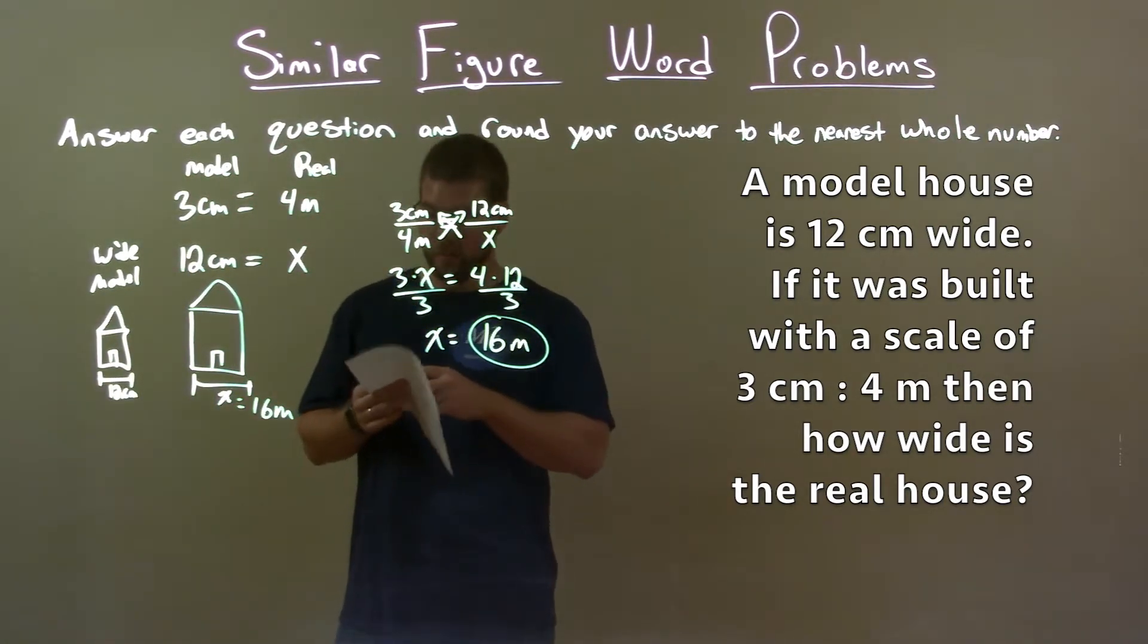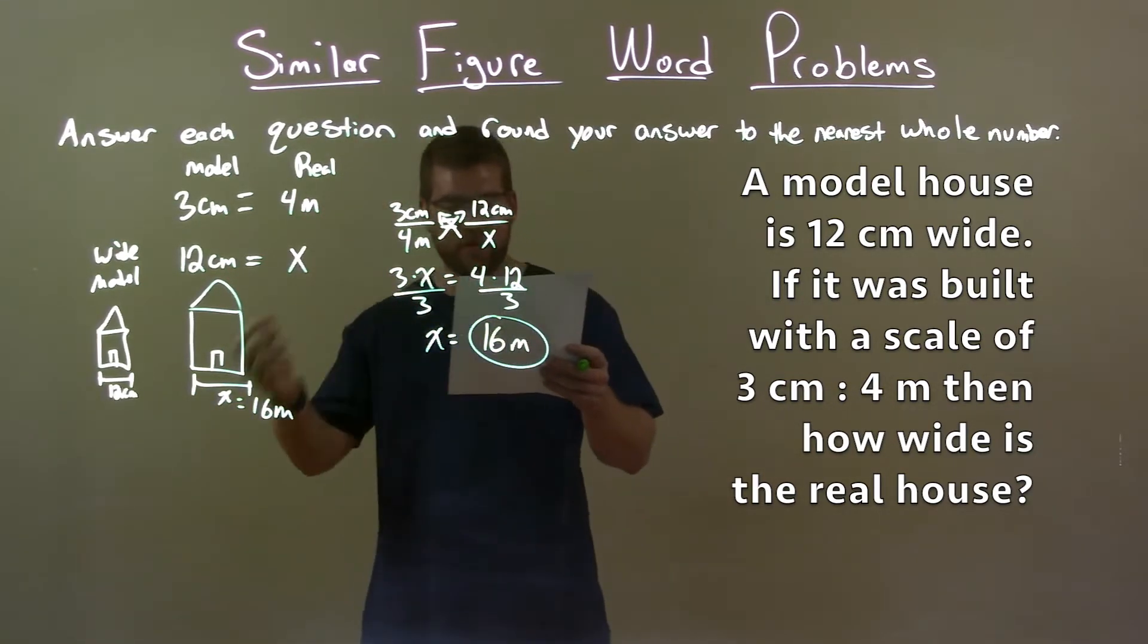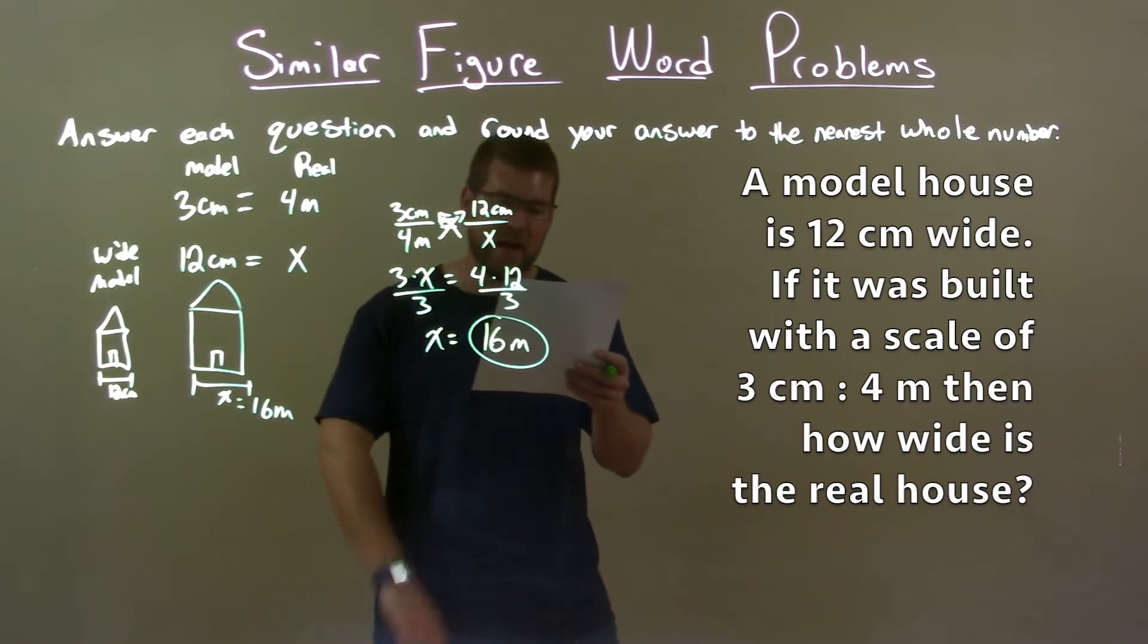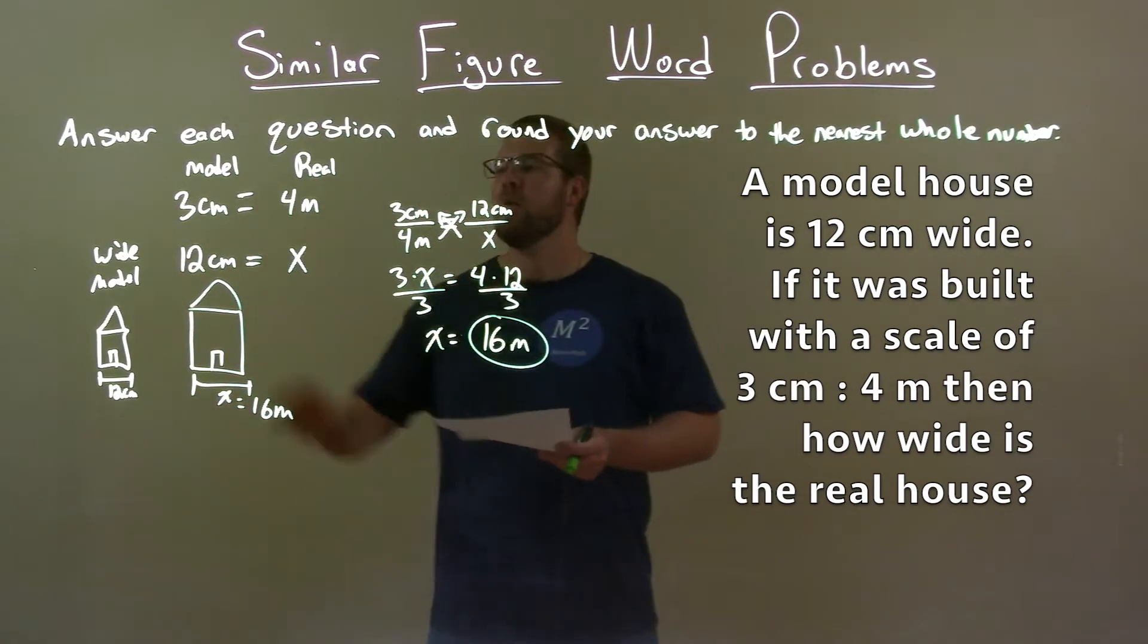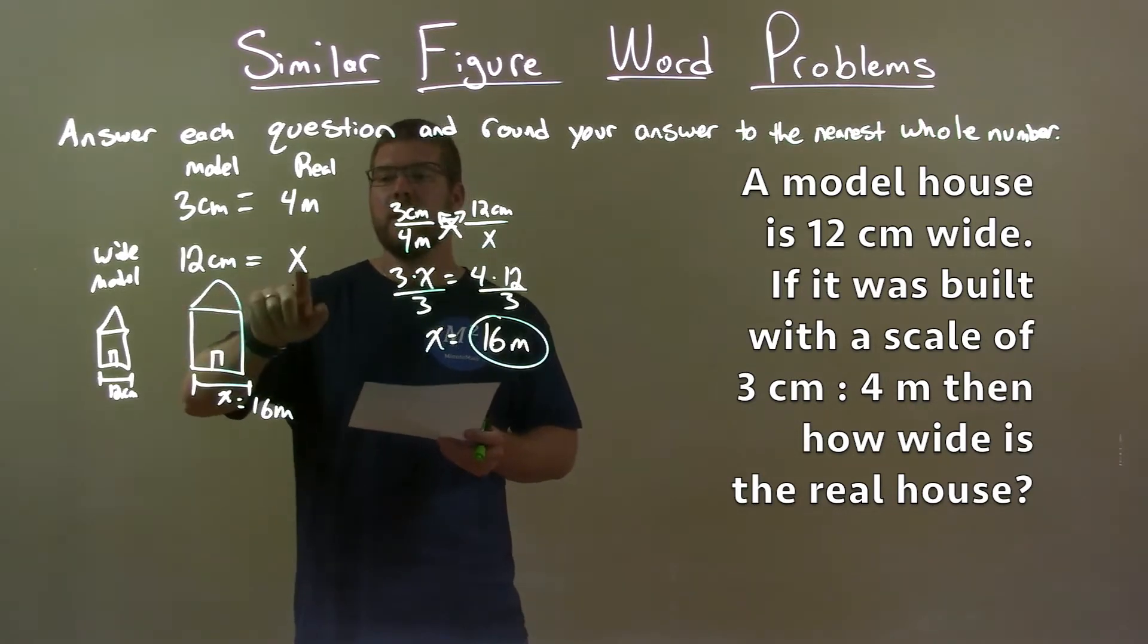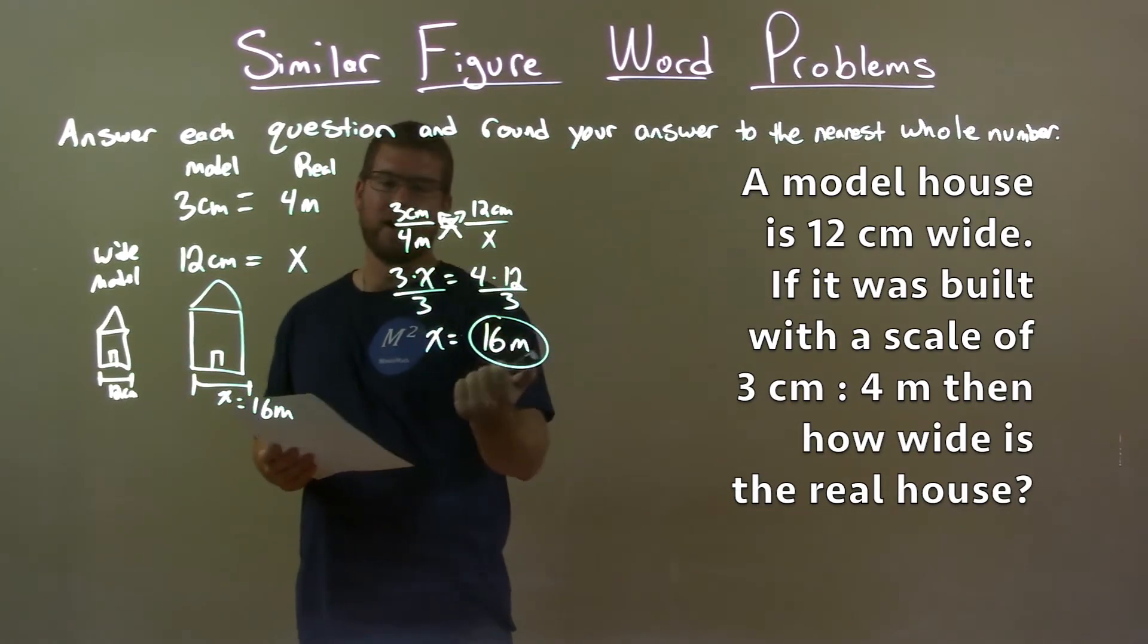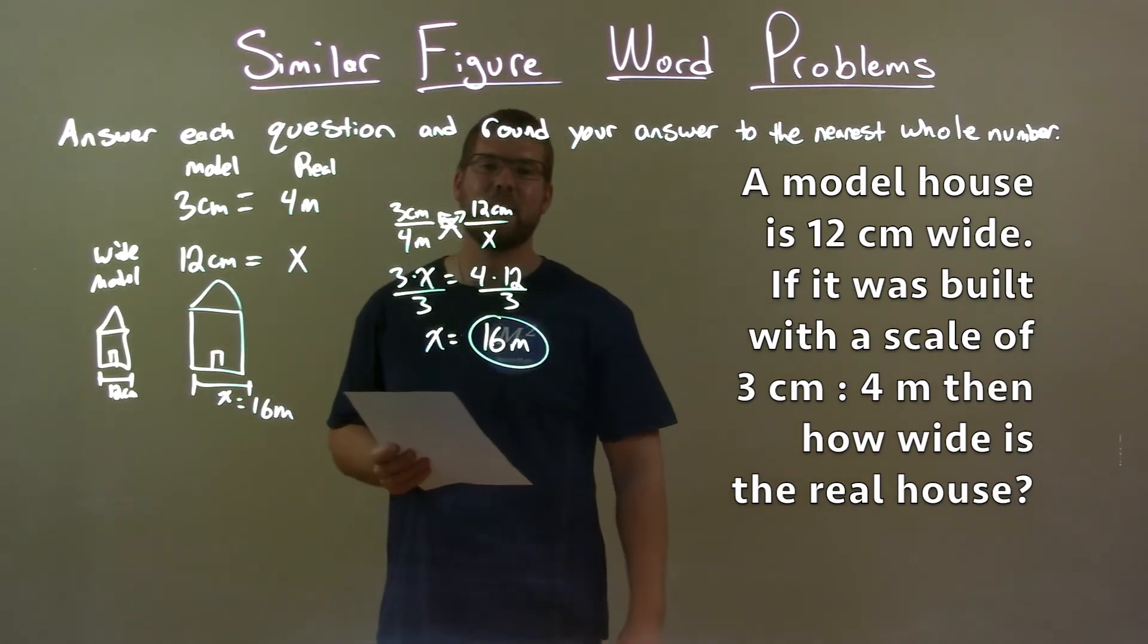Quick recap. We're given the problem: A model house is 12 centimeters wide. If it was built with a scale of 3 centimeters to 4 meters, then how wide is the real house? Well, we'll use that scale plus the value we're given for the width of the model and set it equal to that variable X, the width of the real house. We use that to make a proportion, solve for variable X, and got a final answer of 16 meters.